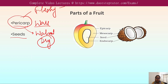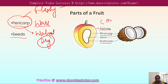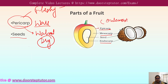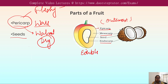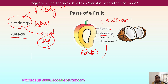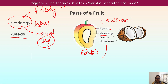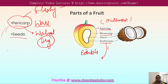The pericarp is differentiated into three layers. The epicarp is the outermost layer, forming the peel of the fruit. The mesocarp is the middle layer, which is the fleshy and edible portion of the fruit. The endocarp is the innermost layer — the inner rough portion where the seed is accommodated.